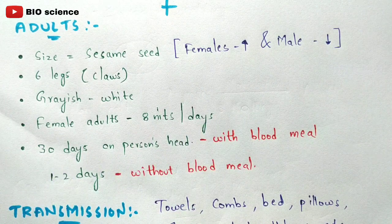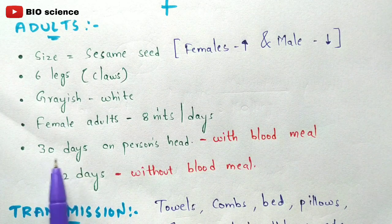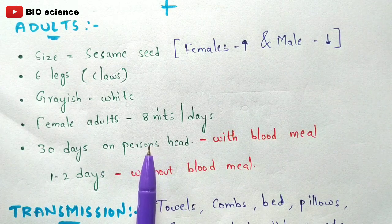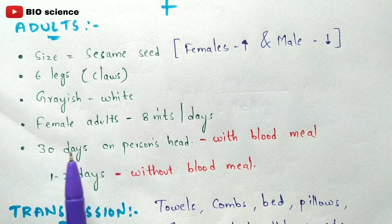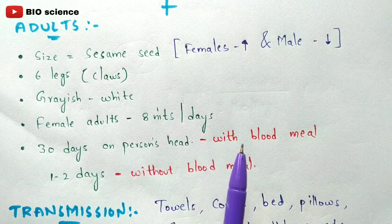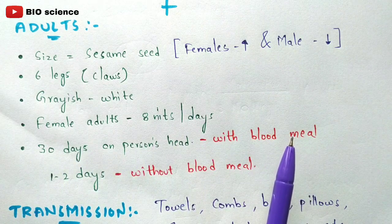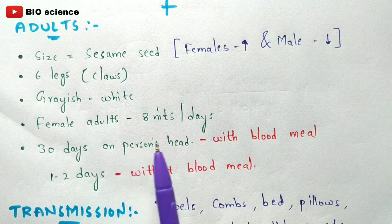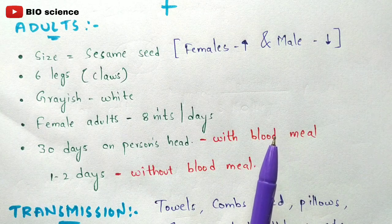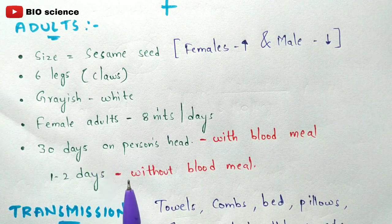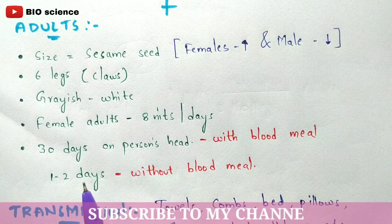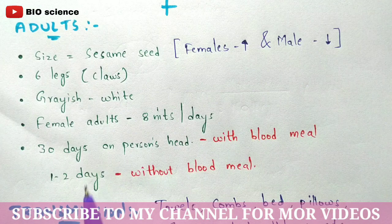The survival capacity of this parasite is 30 days when present on the host and feeding on the blood meal of the human being. If it does not take a blood meal, it will die within one to two days.